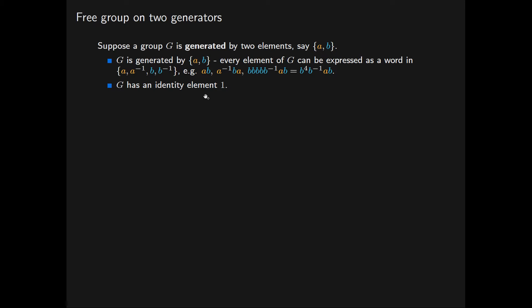G must have an identity element 1. Now note, of course, that because G is a group it satisfies the inverses axiom, so the element 1 can certainly be expressed as a word in these elements.